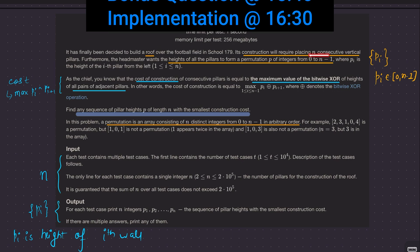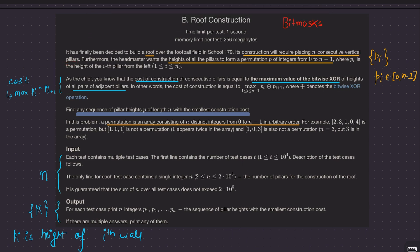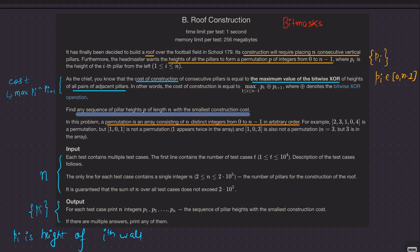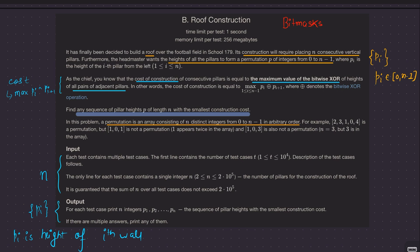We have to place n consecutive vertical pillars, and we want the height of all the pillars to form a permutation P of integers from 0 to n minus 1. A permutation is an array consisting of n distinct integers from 0 to n minus 1 in any arbitrary order. The cost of construction is the maximum value of bitwise XOR of heights of all pairs of adjacent pillars — in other words, the maximum of pairwise adjacent XORs.